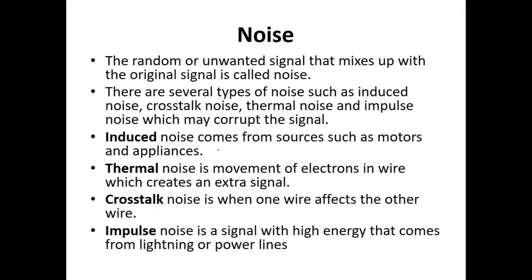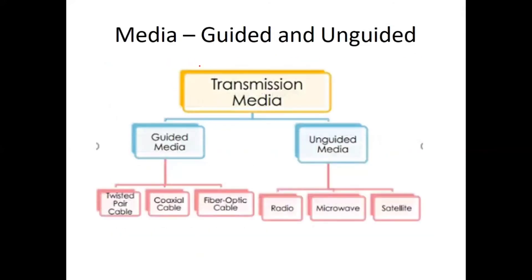We have discussed the different impairment causes: attenuation, distortion, and noise. Coming to the next topic, that is guided and unguided media. Signals are transmitted between communicating devices in the form of electromagnetic signals. These electromagnetic signals travel through transmission media. In the case of wired media, the signal travels through a physical medium.